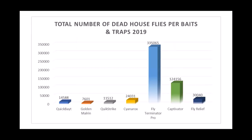Bait products are tested annually, often with 4-H participants, making it a useful educational project for extension agents. Pheromone traps consistently outperform baits in testing because flies enter and can't escape. The Cyanorox was added to testing last year — initial results in a pig barn in Stephenville were not the most promising in that first evaluation.